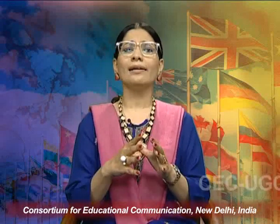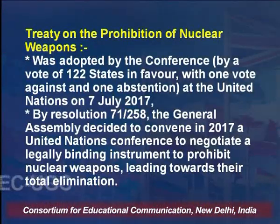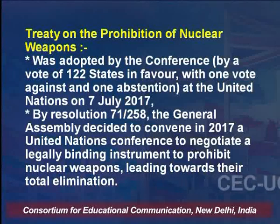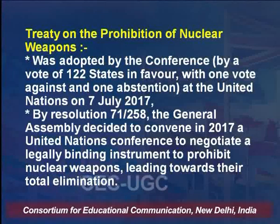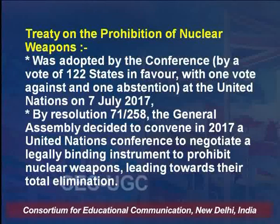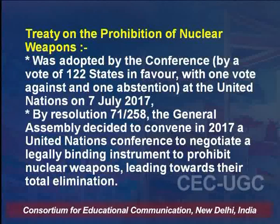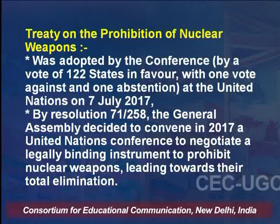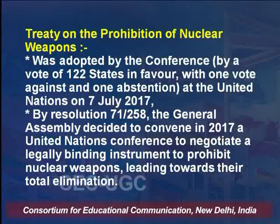Today there are many treaties with respect to nuclear weapons. An important multilateral agreement is the Treaty on the Prohibition of Nuclear Weapons. This was adopted by a conference by a vote of 122 states in favour, with one vote against, at the United Nations on 7 July 2017. By Resolution 17/258, the General Assembly decided to convene in 2017 a United Nations Conference to negotiate a legally binding instrument to prohibit nuclear weapons, leading towards their total elimination.